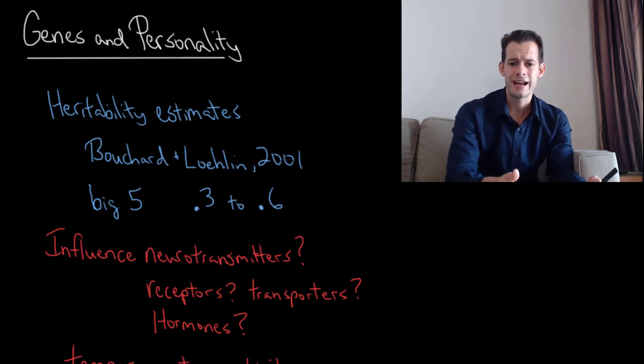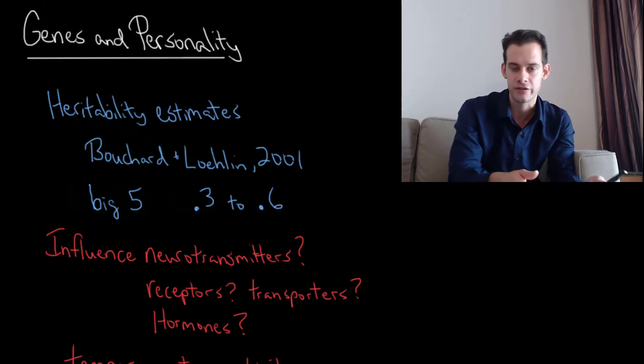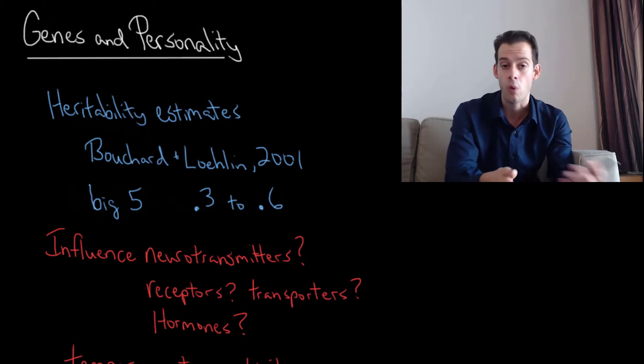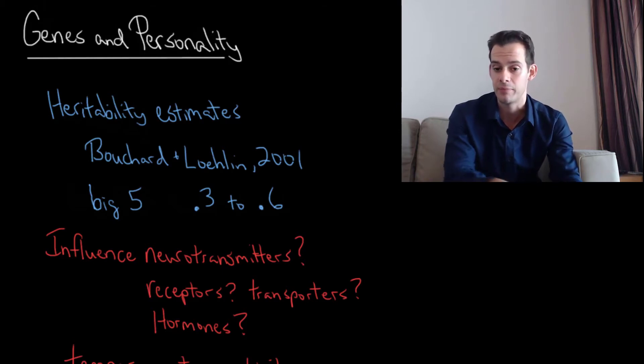When we think about the role of genes in these heritability estimates for personality traits, it's important to remember that these don't tell us anything about specifically how it's happening. This isn't saying it's levels of neurotransmitters or receptors or transporters or hormones. We don't know what the genes are actually affecting to cause these differences. We just know that genes are partly responsible for the difference in personality between people.